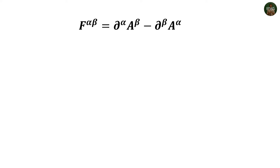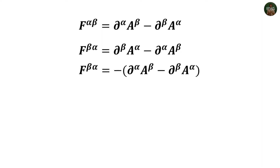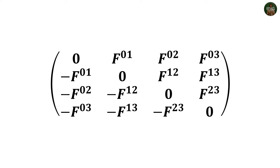Each index runs from 0 to 3, giving 16 components total, but with interdependencies reducing to six. We define the field tensor F^(alpha beta) = del^alpha A^beta - del^beta A^alpha. Interchanging indices gives F^(beta alpha) = -F^(alpha beta), making it antisymmetric. Setting beta = alpha gives F^(alpha alpha) = 0, so the four diagonal elements are zero. The antisymmetry leaves 12 elements in pairs, giving six distinct components to represent our six field components.